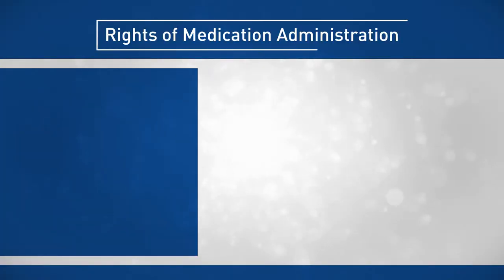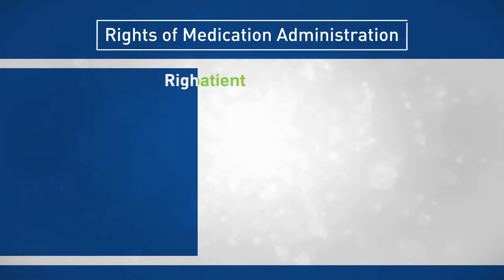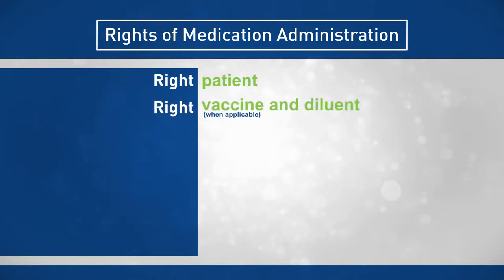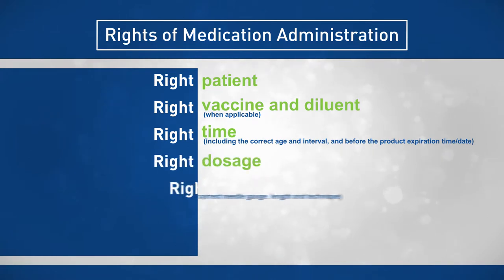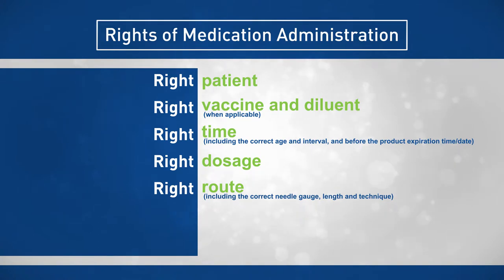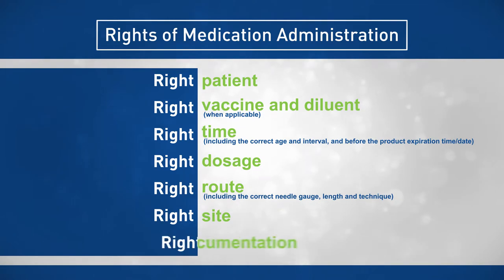For all vaccine administration, make sure you have the right patient, right vaccine and diluent, right age and interval, right dosage, right route including the correct needle gauge, length and technique, right site, and right documentation.